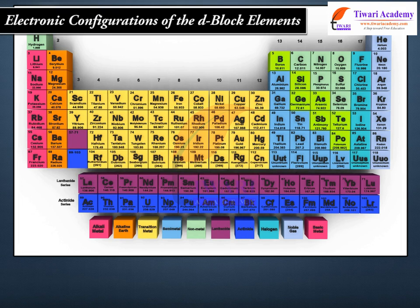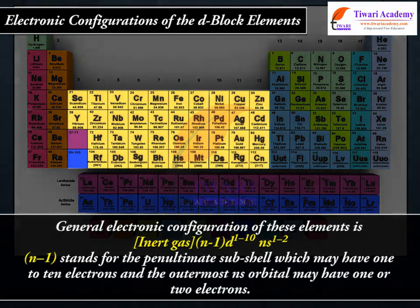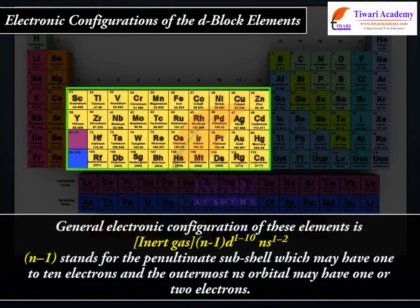The general electronic configuration of D-Block elements is: [Inert Gas] (N-1)D 1-10, NS 1-2. Here, N-1 stands for the penultimate subshell, which may have 1 to 10 electrons, and the outermost NS orbital may have 1 or 2 electrons.